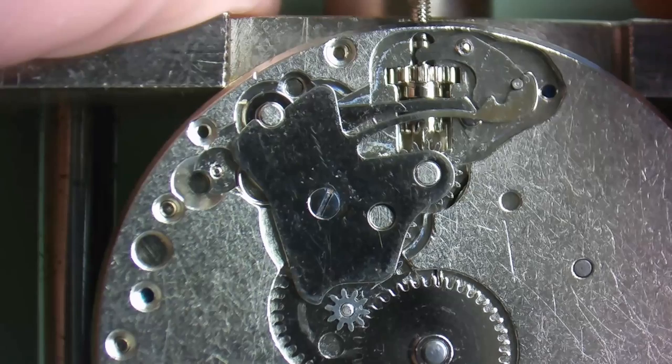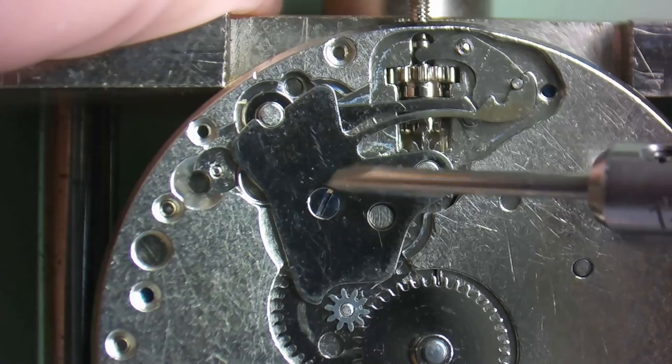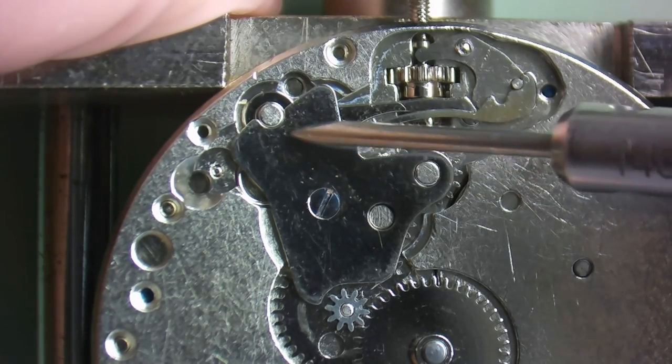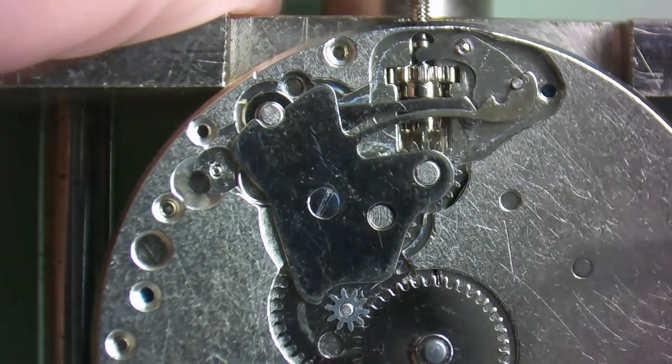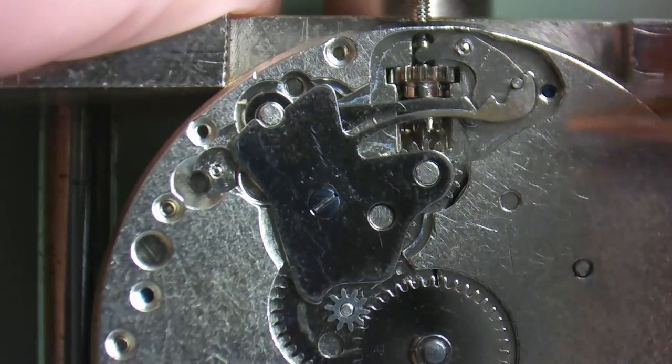All right, so let's get into this thing. For our disassembly, we're just going to take off the setting lever jumper and we'll remove the spring underneath before we can get to the MotionWorks. Now just a little tip here.